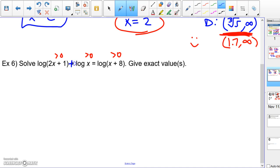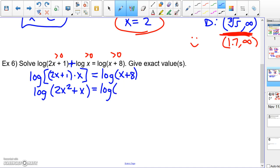So notice it's log plus log. We're going to go back and use our properties and say we can condense to a single log using multiplication. So 2x plus one times x. I can condense that into a single log. So log of that equals log of x plus eight. You can distribute in there if you want to. So log of 2x squared plus x equals log of x plus eight.